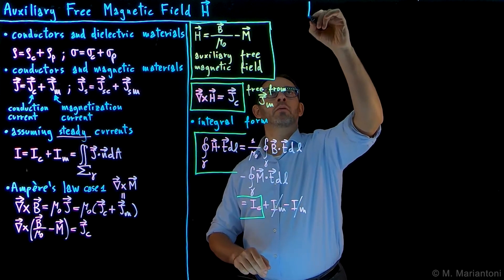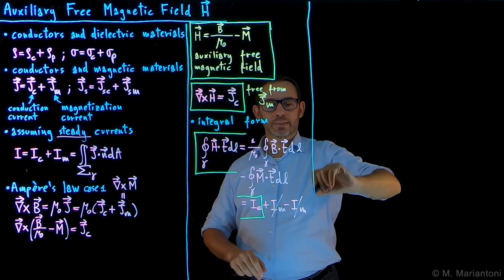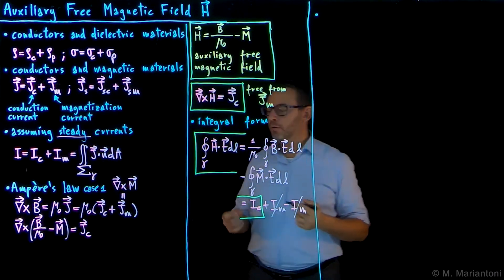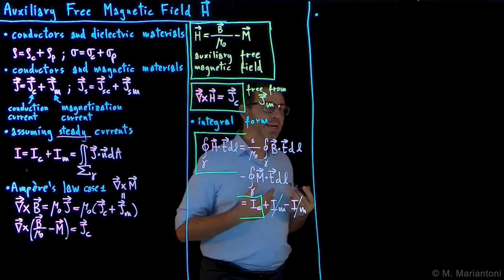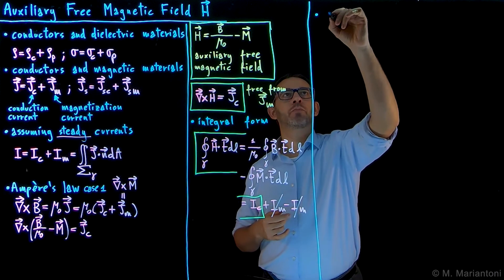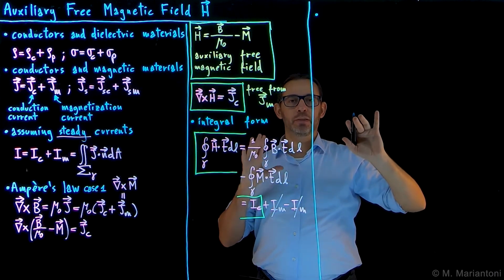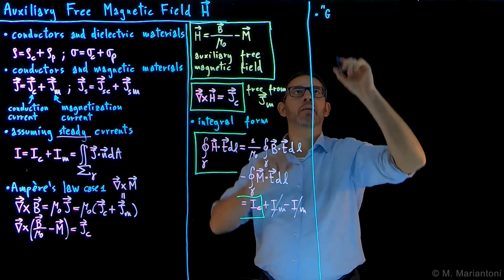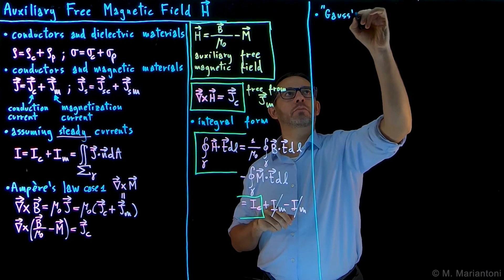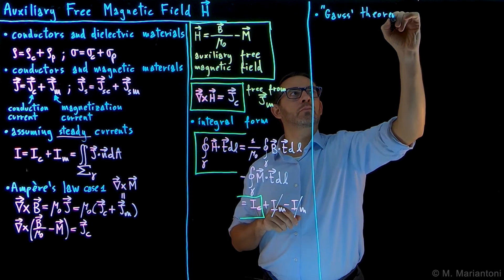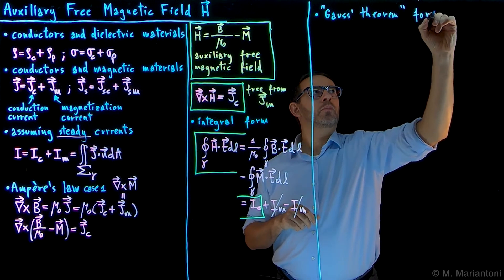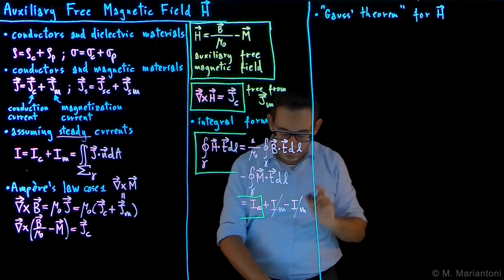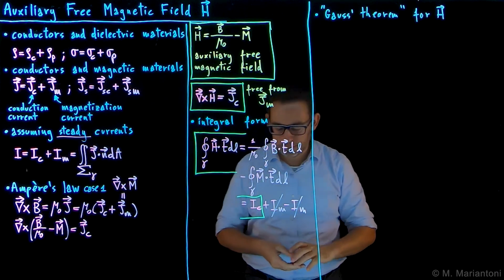The next step is to study, instead of Ampere's law for H, something like Gauss's theorem for H. We know that for B we have the solenoidal property: the divergence of B is equal to zero. For H, we end up having something like Gauss's theorem. We shall also see many analogies between H and E, the electrostatic field, under certain conditions, which we discuss later on in some examples.